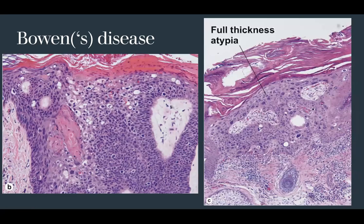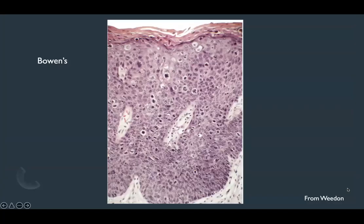Additional examples from textbooks demonstrate Bowen's disease or squamous cell carcinoma in situ with large hyperchromatic nuclei of keratinocytes located high up near where the granular layer should be at the top of the stratum spinosum, showing another example of full-thickness atypia.